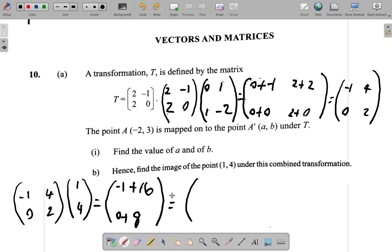So what you get is -1 plus 16, which is 15 up here, and 0 plus 8 is 8 down here. So it's (15, 8).